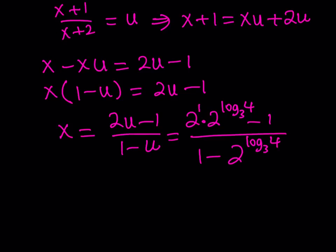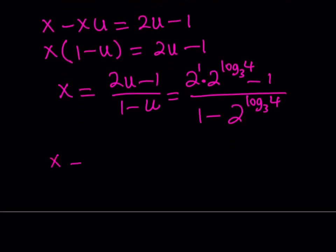Consider that this is 2 to the power 1, and when you multiply powers you add the exponents. So x equals 2^(1 + log₃4) - 1 over the denominator. The denominator is not really going to change much because we have 2 to the power something.